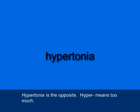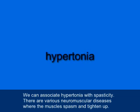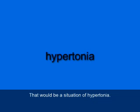Hypertonia, H-Y-P-E-R-T-O-N-I-A, is the opposite. Hyper means too much. So hypertonia literally means a condition of too much muscle tone. We can associate hypertonia with spasticity. There are various neuromuscular diseases where the muscles will spasm and tighten up — that would be a situation of hypertonia.